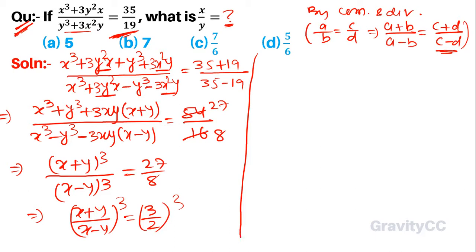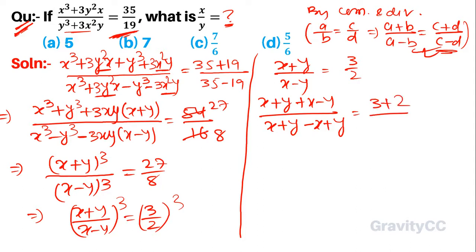So x plus y over x minus y equals 3 over 2. Again we use the property, so x plus y plus x minus y over x plus y minus x minus y equals 3 plus 2 over 3 minus 2.